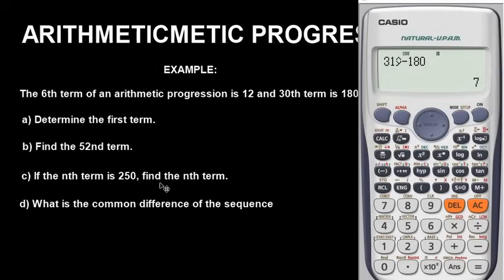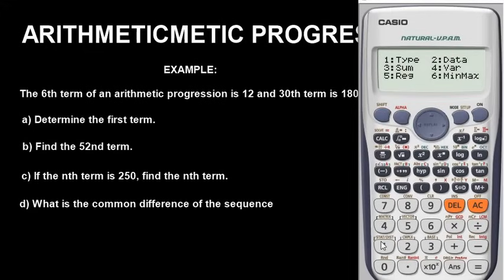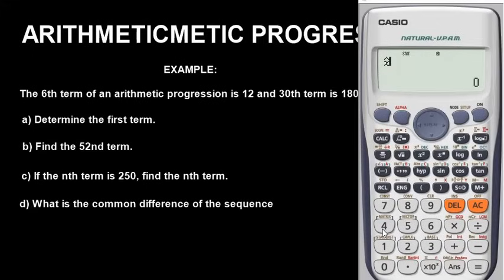Now let's find n. Having found the first term, 52nd term, and common difference, let's find n. Press Shift, button 1, and this time go for the symbol under option 4 — press 4. We are asked: if the nth term is 250, find n. Go in front of that symbol and press 250, then press equals to get n = 40.